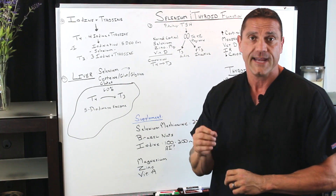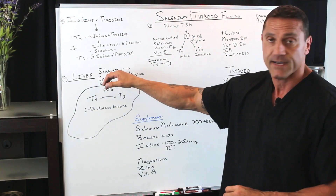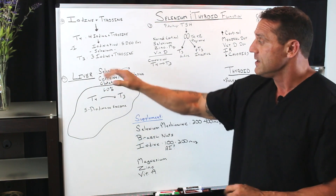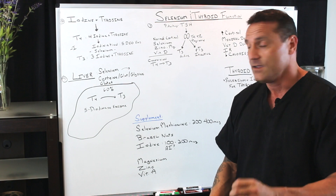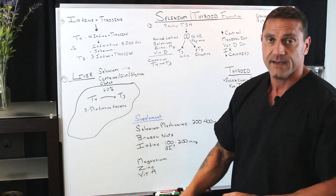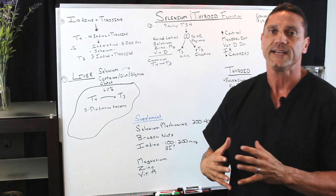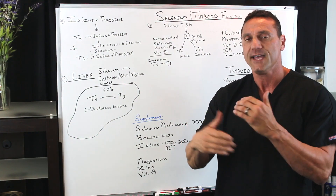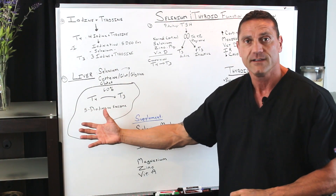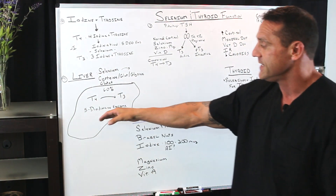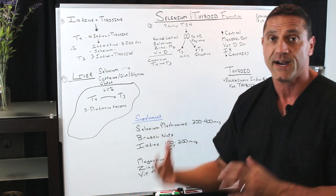The main mineral that helps with that liver conversion is selenium. Selenium is also needed to make cysteine, glutamine, glycine, and glutathione — all of these other ingredients. Selenium is needed to help with the production of those, to help with the liver conversion, to help with that 5-deiodinase enzyme, to convert inactive T4 to active T3 so your body can use it.